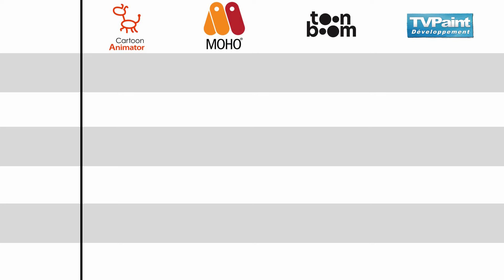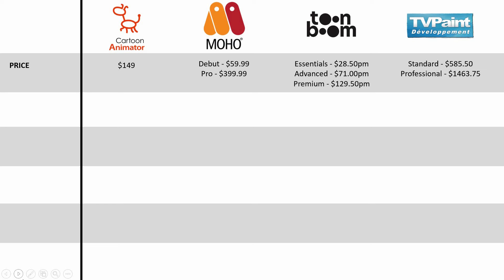This video is specifically for those who are new to animation, who want to start out and purchase a software but don't know which one to get, or maybe someone who wants to switch to a different software. The first thing we look at is price. The price difference between these softwares is quite significant. The first one is Cartoon Animator at $149, which is probably the cheapest option.